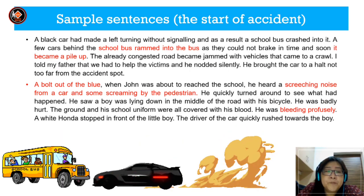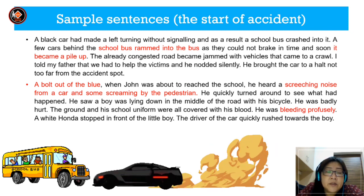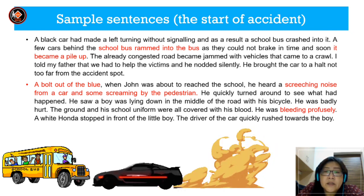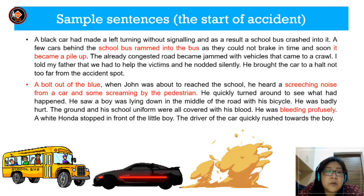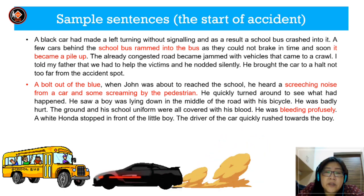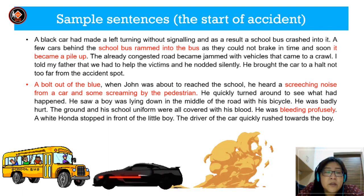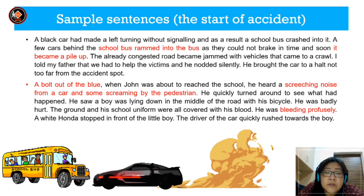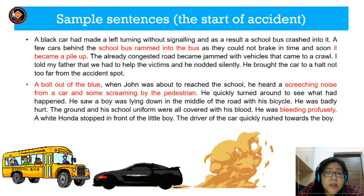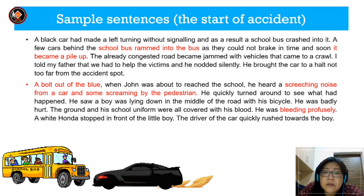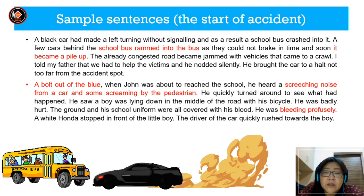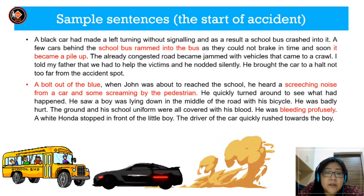A black car had made a left turn without signalling and as a result, a school bus crashed into it. A few cars behind the school bus rammed into the bus as they could not brake in time and soon it became a pile-up. The already congested road became jammed with vehicles that came to a crawl. I told my father that we had to help the victims and he nodded silently. He brought the car to a halt not too far from the accident spot. When John was about to reach the school, he heard a screeching noise from a car and some screaming by pedestrians. He saw a boy lying in the middle of the road with his bicycle. He was badly hurt. The ground and his school uniform were all covered with blood. He was bleeding profusely.